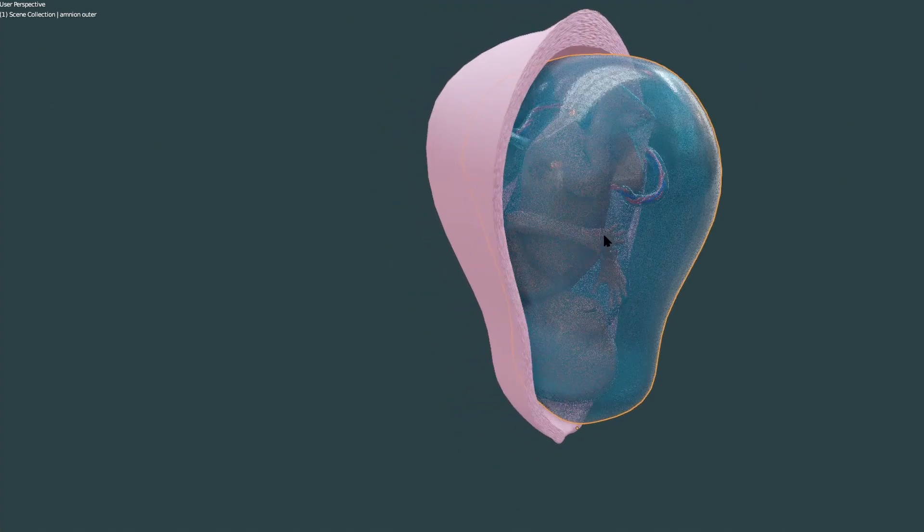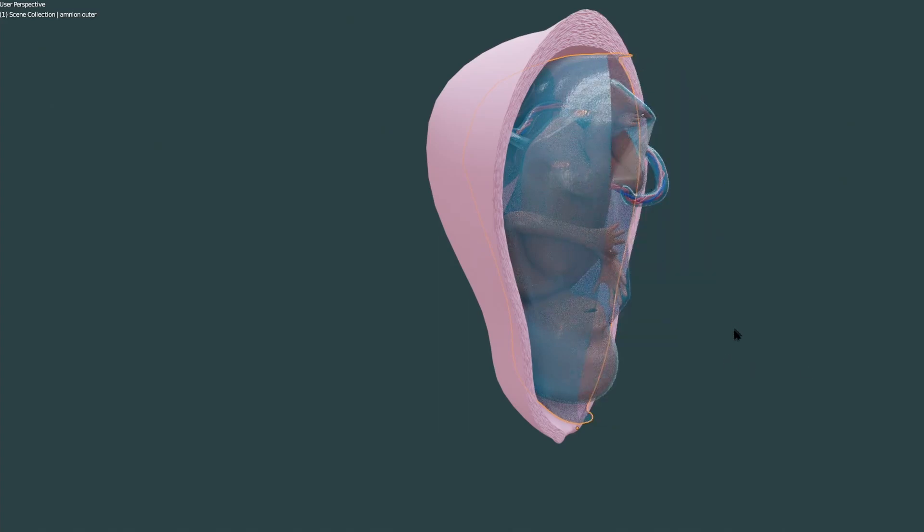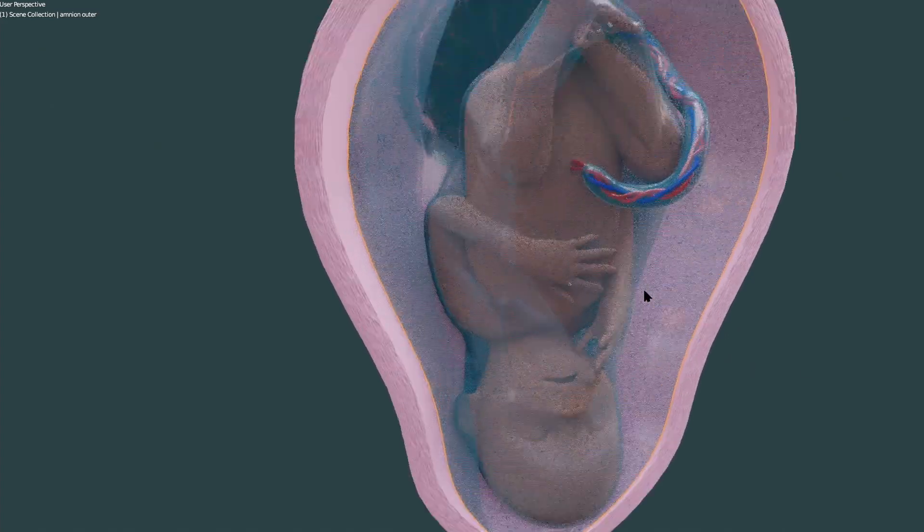Now, if we cut a section, if we cut this amnion from here then what we will see. So let's cut the amnion. Here we have cut the amnion and here you can see that again this is the baby.